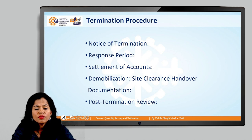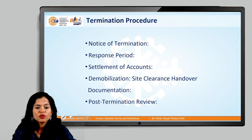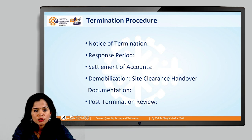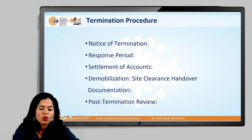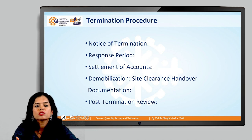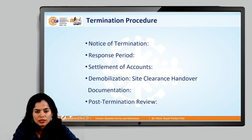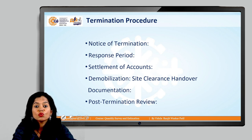The termination procedure: whenever the contract needs to be terminated, a notice is given to the other party — it must come to the notice of the other party; one cannot simply stop work without giving a termination notice. Then comes the response period, where the response of the other party is assessed. The account needs to be settled, and after settlement of accounts, whatever needs to be handed over is done — that is site clearance. The contractor takes all equipment, materials, and labor from the site, which is called demobilization. All documents related to the project are handed over to the other party, followed by a post-termination review of why it ended and how everything was closed according to the contract procedure.